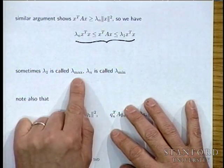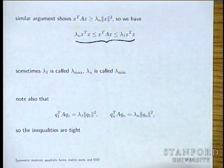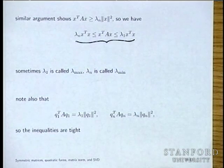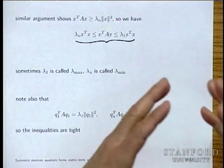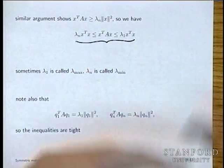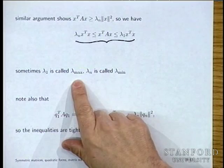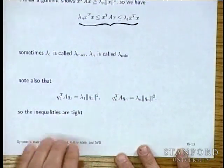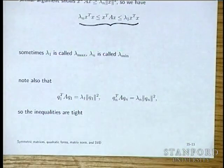You would say lambda_max of A, but only when A is known to be symmetric. A non-symmetric A can have complex eigenvalues, making max meaningless — so you would never talk about the maximum eigenvalue of a non-symmetric matrix. For a symmetric matrix, this is fine.